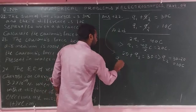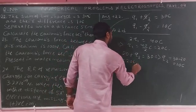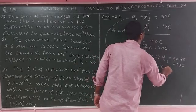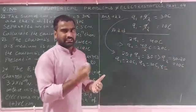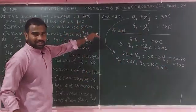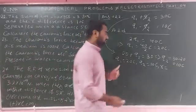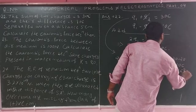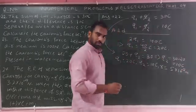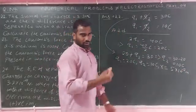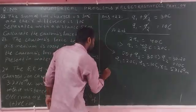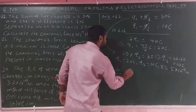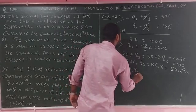So Q1 equals 20 C and Q2 equals 10 C. The distance is 5 centimeters, which equals 5 times 10 to the power minus 2 meters. Using the Coulomb's force formula: F equals 1 over 4 pi epsilon-zero times Q1 times Q2 over R squared.